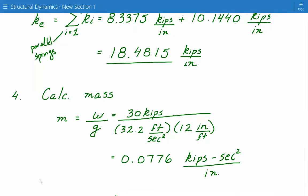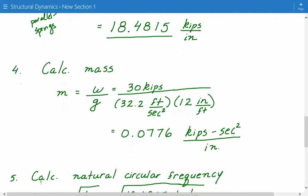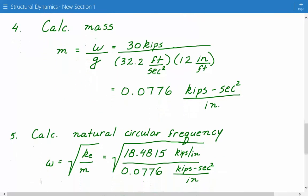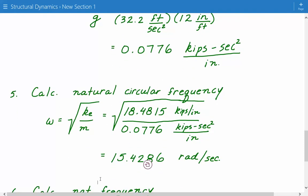Once we have the equivalent stiffness and the mass, we can calculate the natural circular frequency, omega, which is simply the square root of the equivalent stiffness, divided by the mass. So just plug in the numbers, 18.4815 divided by 0.0776, take the square root. And so the natural circular frequency is equal to 15.4286 radians per second.